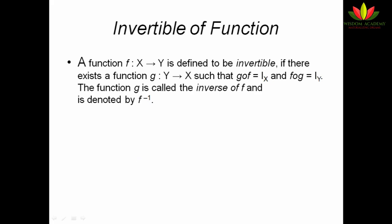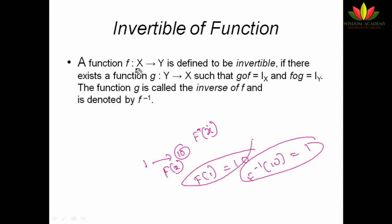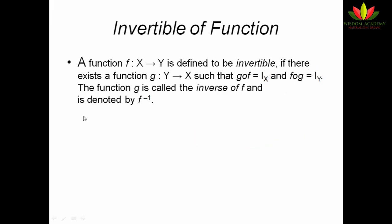Next we are going to see invertible functions. As I mentioned during composition, we can take the inverse of a function to get back the original value. If f(1) = 10, then f⁻¹(10) should give 1. This is called the inverse. A function f: X → Y is defined as invertible if there exists a function g: Y → X such that g∘f = identity on X and f∘g = identity on Y. Not all functions have inverses — only certain functions do.